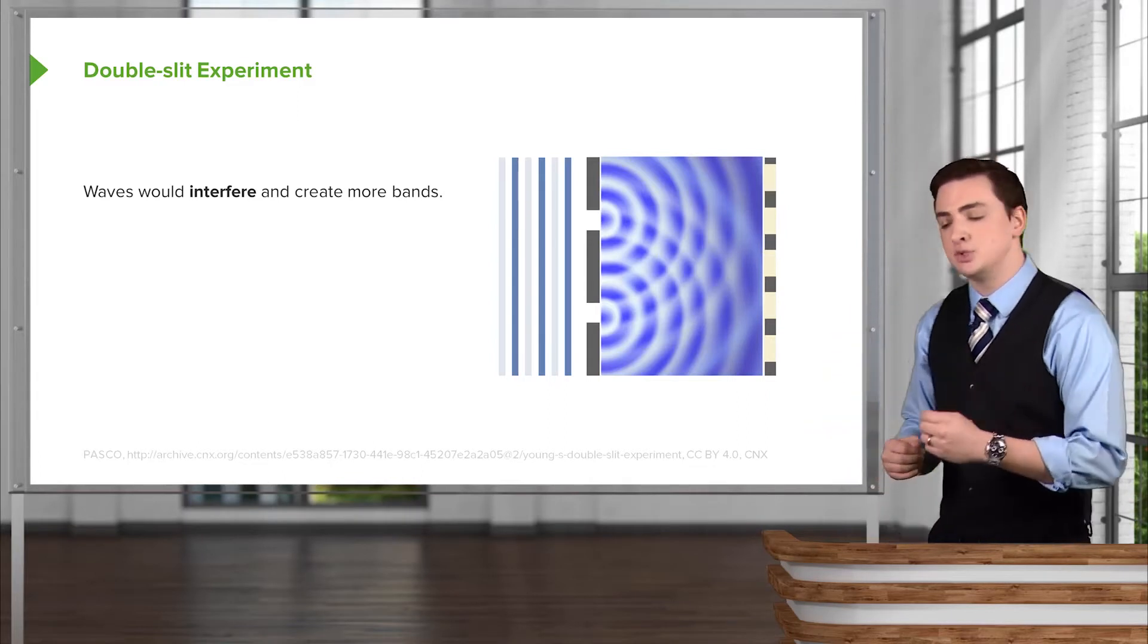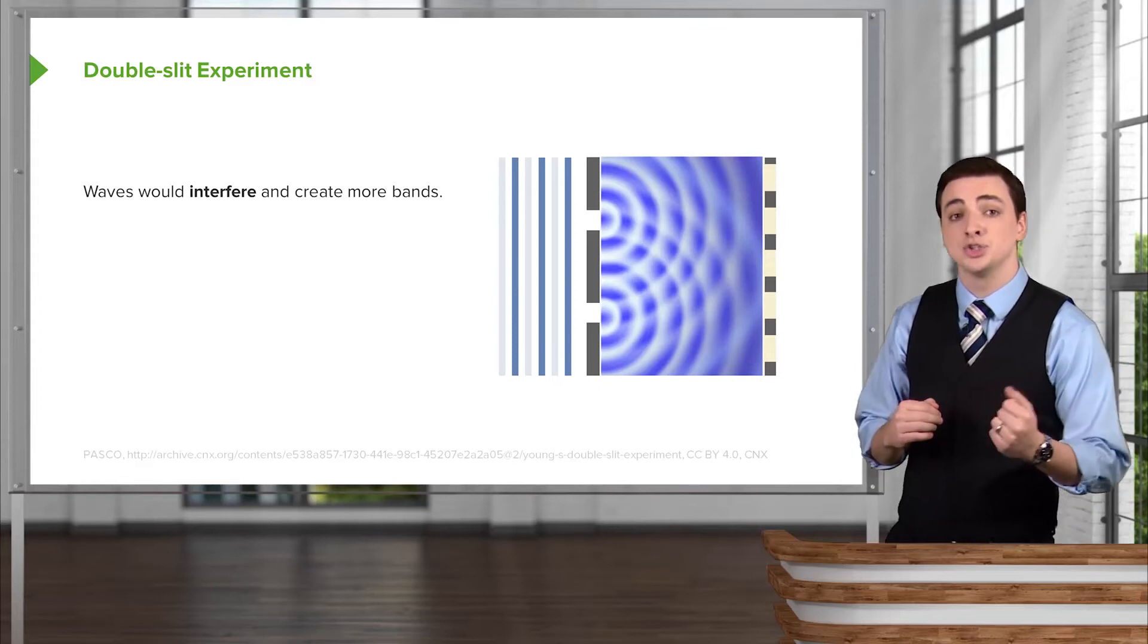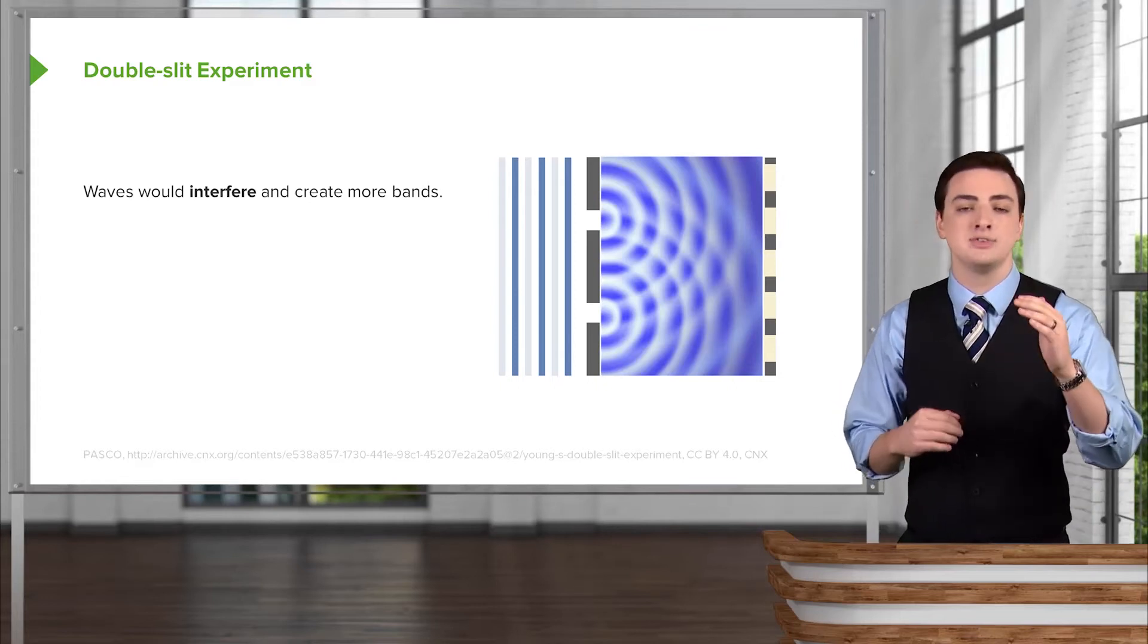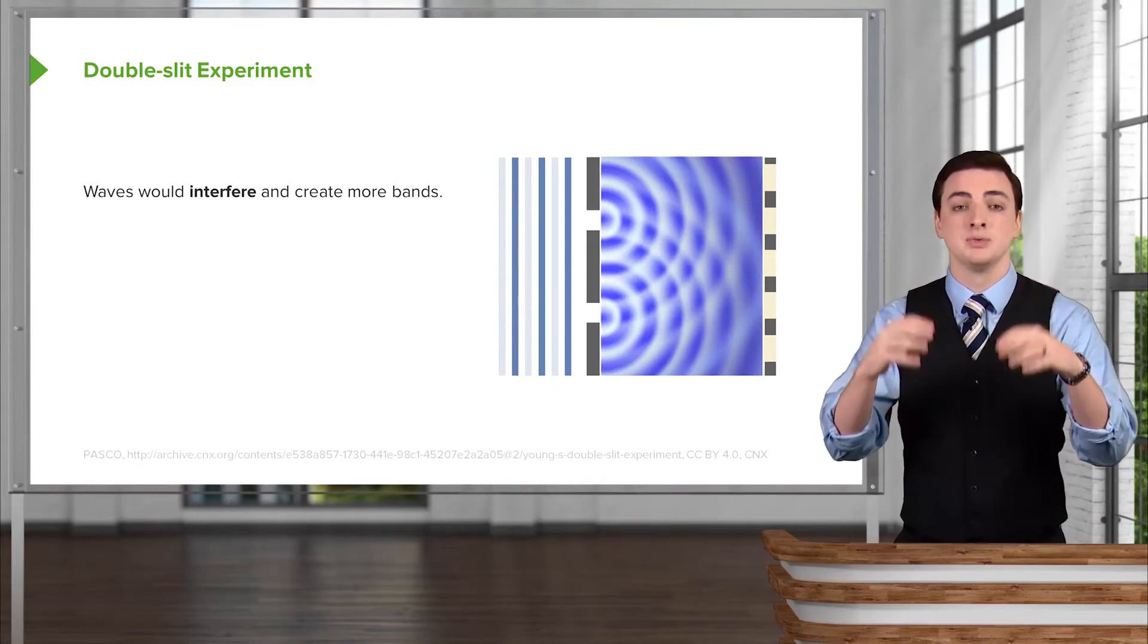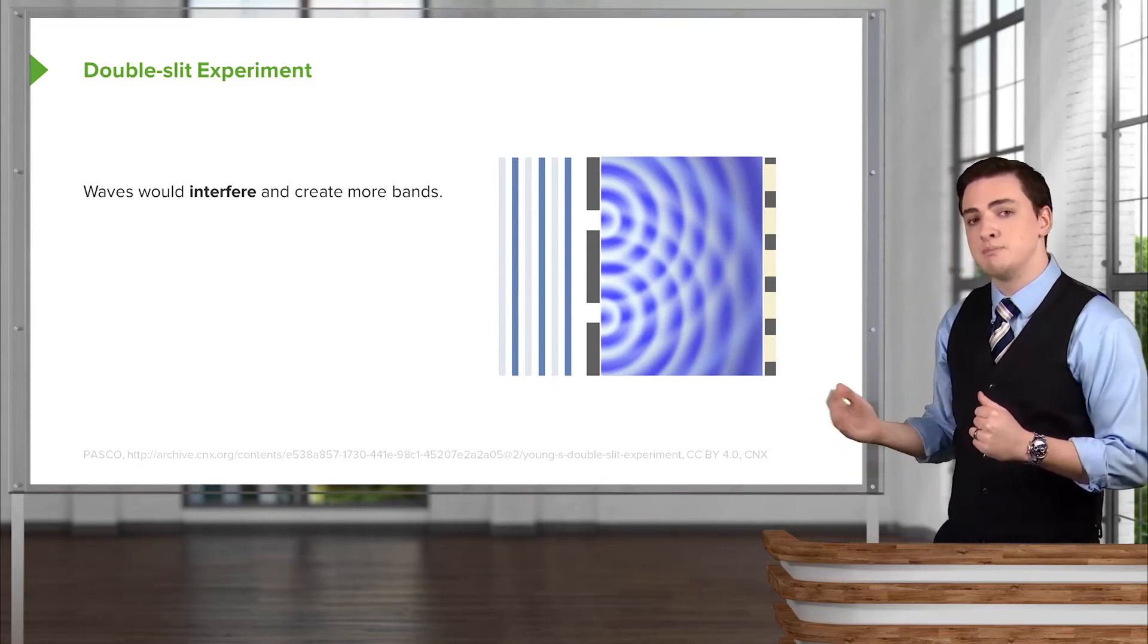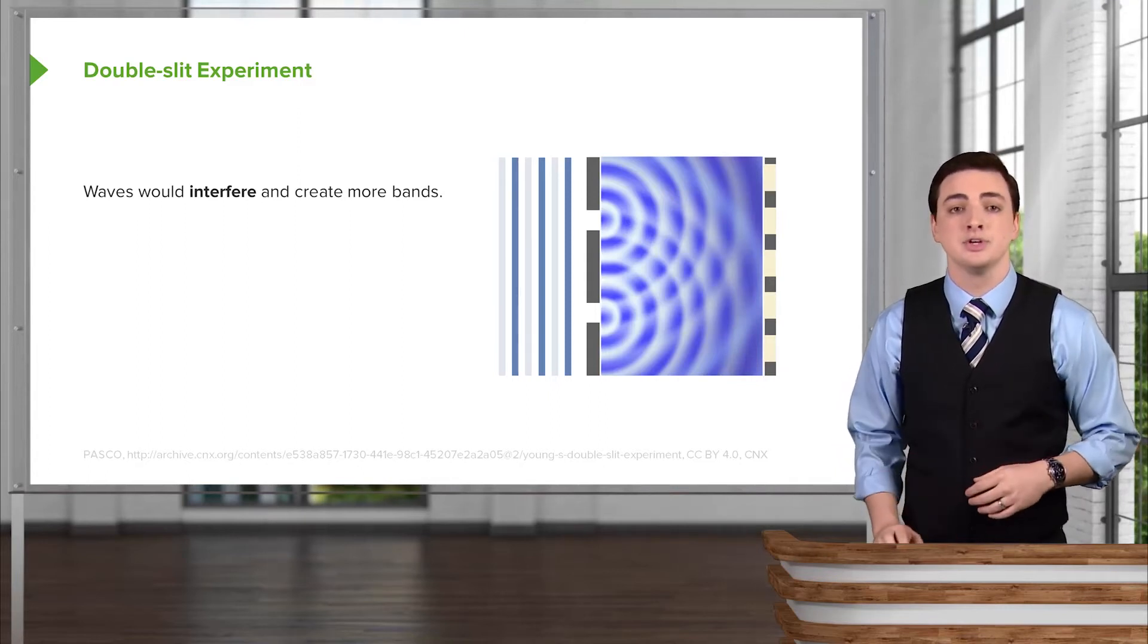What would then happen is if both of these waves are impacting this boundary and bending outwards in these spherical shapes, the parts of the waves that are going to be constructively interfering, both that are peaks, will constructively interfere on the back screen, creating a bright spot as the light constructively interferes.